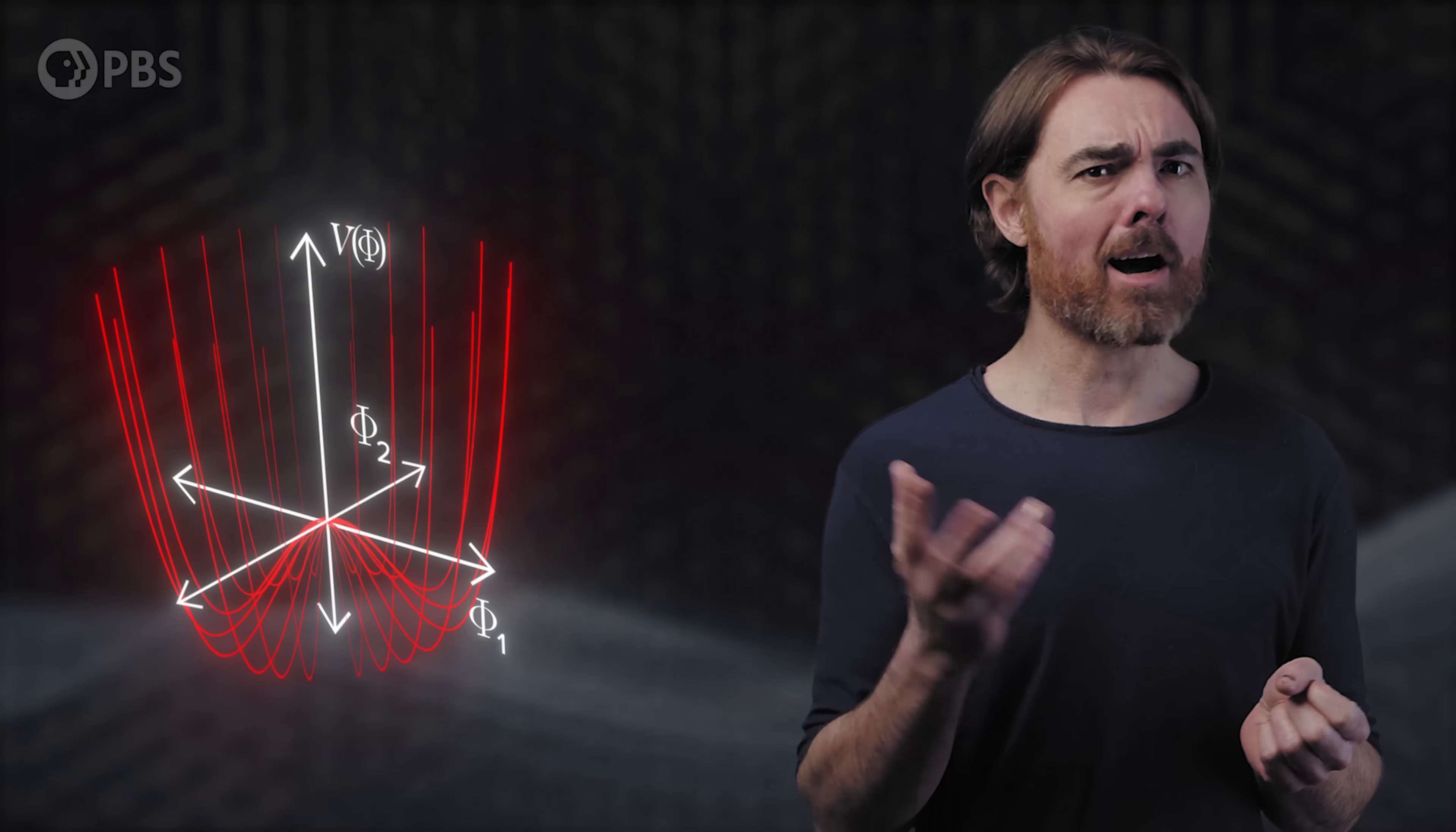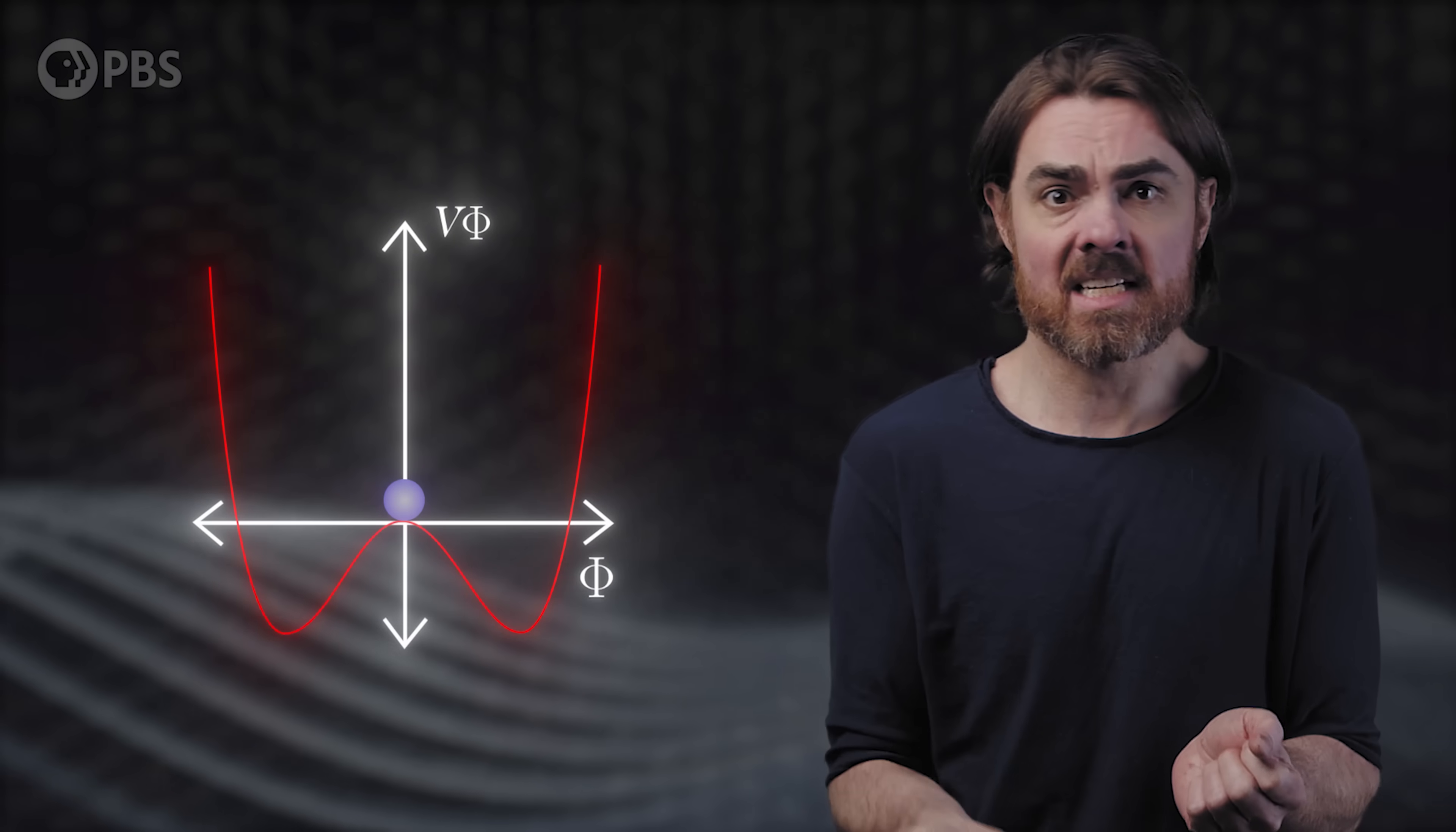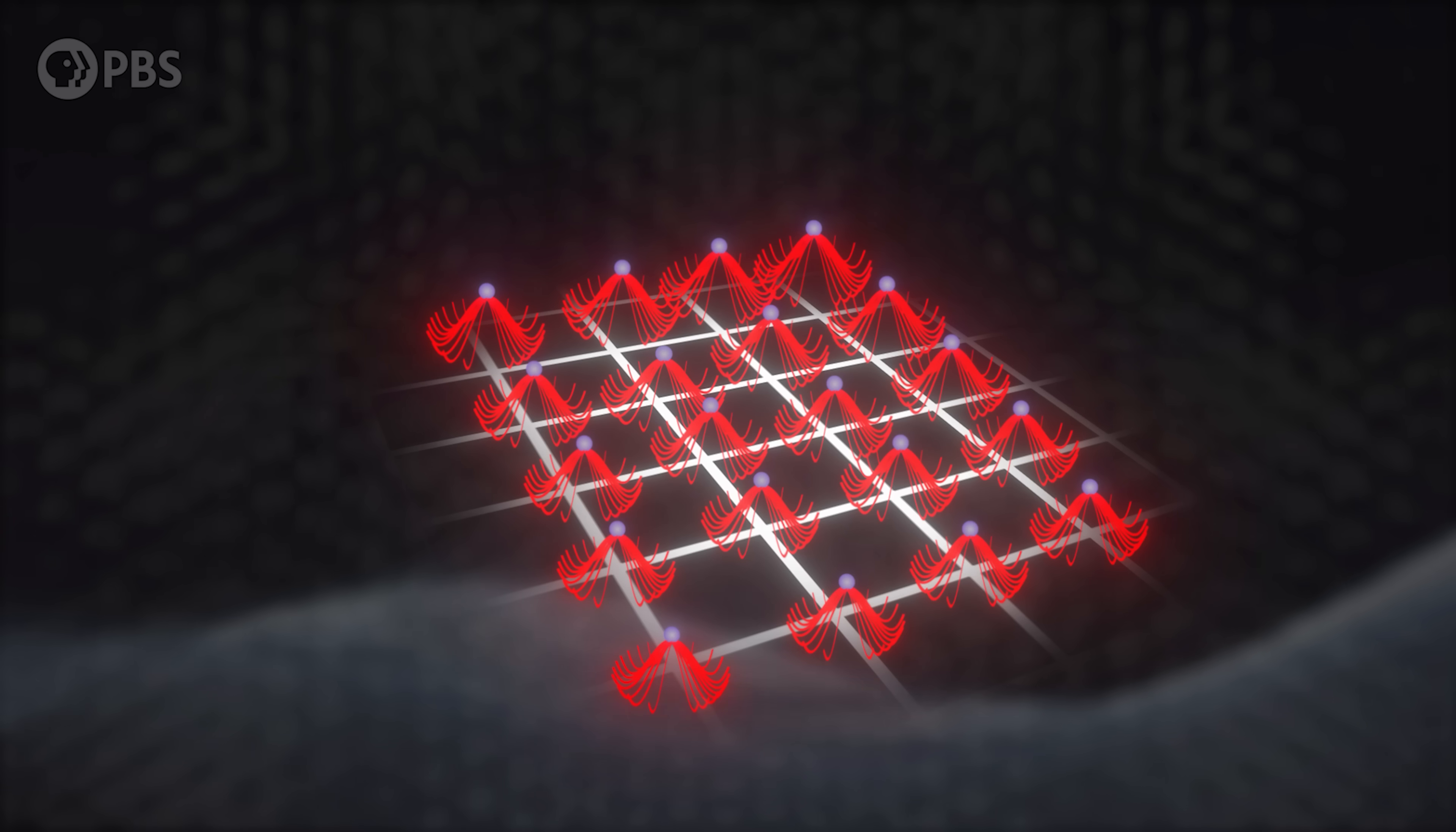So quite suddenly, the Higgs field everywhere in the universe found itself sitting at a higher energy than it needed. It was momentarily stable at that point, just like a ball sitting at the top of a hill. But the slightest quantum jiggle would send the ball or the Higgs field rolling down in a random direction. And that's what happened. Here and there, across the universe, the Higgs field started falling towards the new vacuum state. We call this vacuum decay.